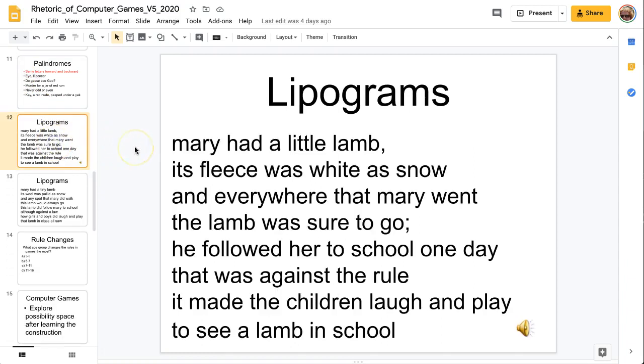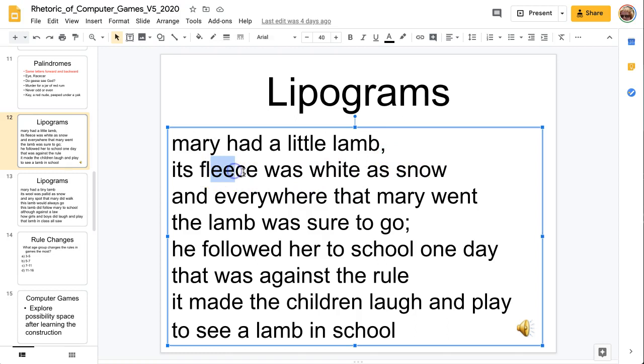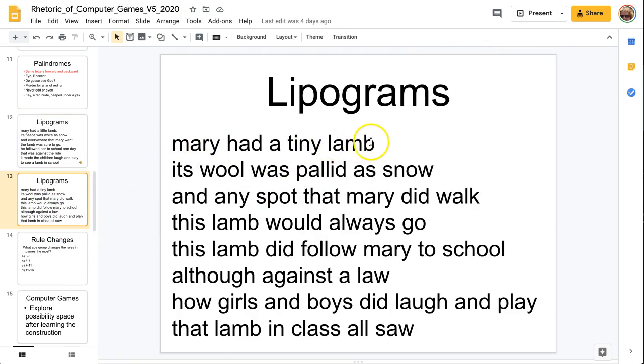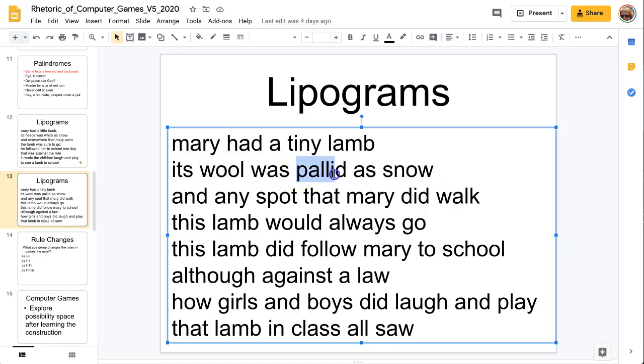Now lipograms are a little bit different. A lipogram is when you remove a certain letter. For example, Mary had a little lamb, its fleece was white as snow. Now fleece, for example, if we remove the letter E, then we must change this word into something else. And now you have the word white here, for example, has an E in it. And if you notice that there are not any E's in the whole poem right through here.